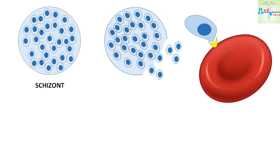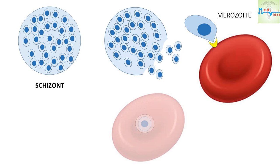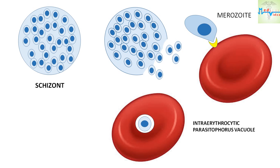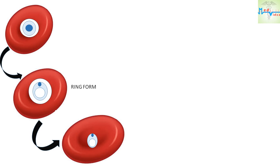The merozoites have a tapering apex called the apical complex, which attaches to the glycophorin receptor. The merozoite then invaginates the RBC and is found in an intra-erythrocytic parasitophorous vacuole. Inside the erythrocyte, the merozoite loses its internal organs and appears as a rounded body having a vacuole in the center, with the cytoplasm pushed to the periphery and the nucleus at one pole. This resembles a ring and is thus called the ring form or young trophozoite. The parasite feeds on the hemoglobin of the erythrocyte.